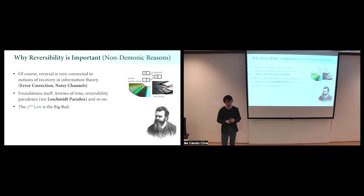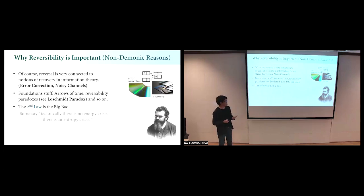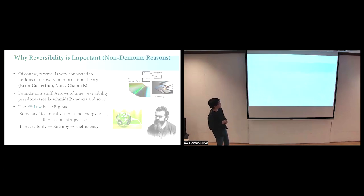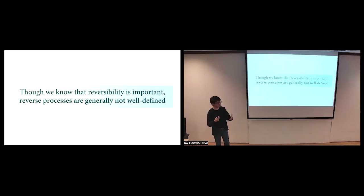Some physicists crudely say things like 'there's no energy crisis, there's an entropy crisis' - that's very snarky. But their point is that there's some relationship between irreversibility, entropy, and inefficiency. Of course there is an energy crisis because we want usable energy down the line. But in a very deep way, this is also related to the notion of entropy, efficiency, and irreversibility. So we know that reversibility is important for all these reasons: foundations, information theory, and very practical concerns like energy.